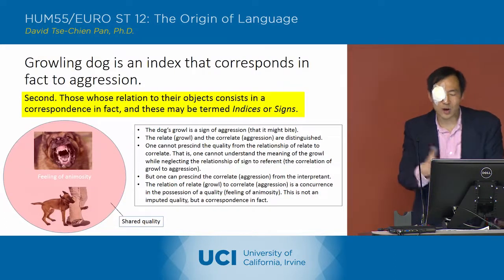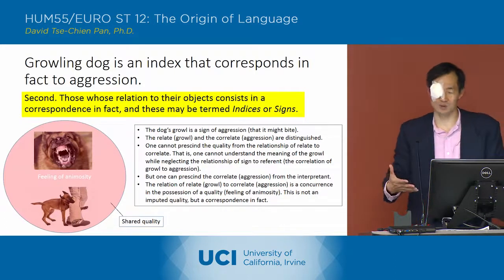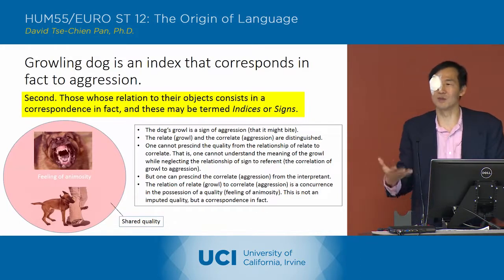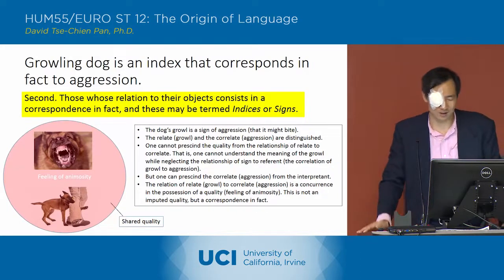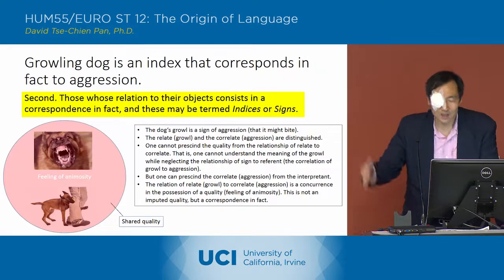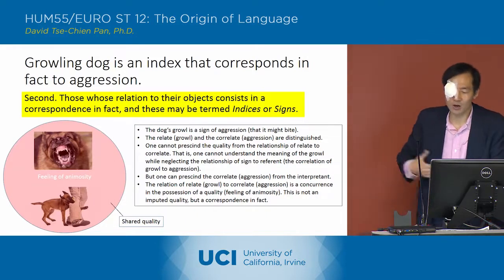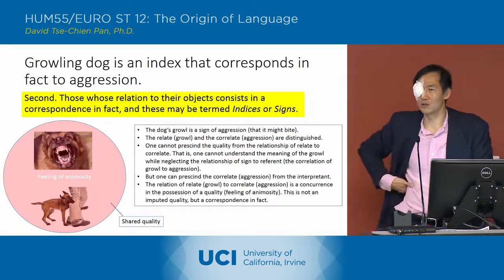So the dog's growl is a sign of aggression, which is to say that the dog might bite. The relate and the correlate — the growling and the aggression — are distinguished. They're two different things.